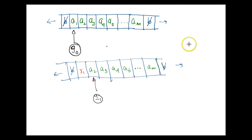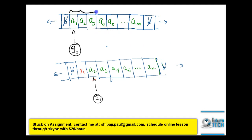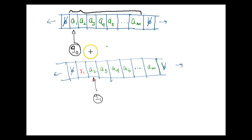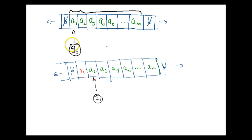Let us understand the transition of a Turing machine. Say the tape symbols from A1 to An are initially in the cells, and Q0 is the initial state — the head of the finite control is on A1. When considering the Turing machine as an accepting device, the head has to be placed on the first symbol of the tape, so the initial state should always read the first symbol. Let us now understand the transition.